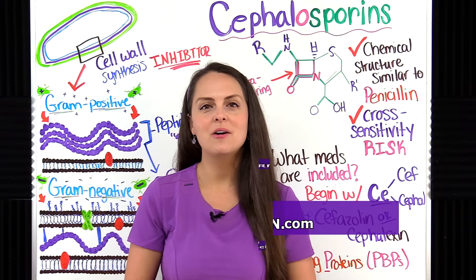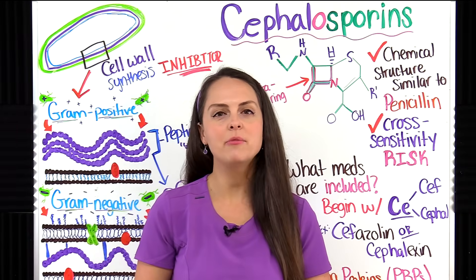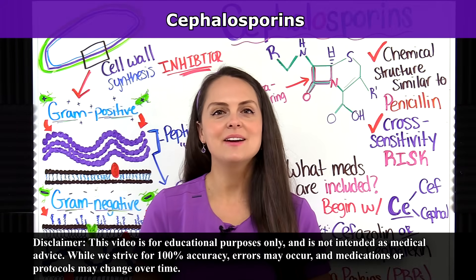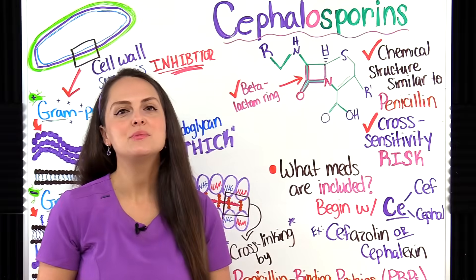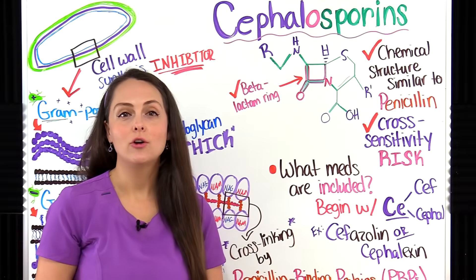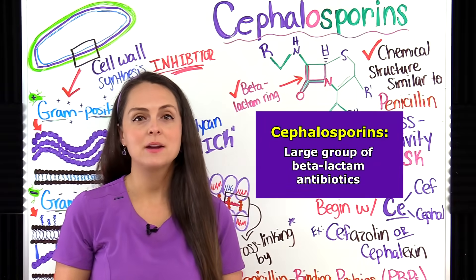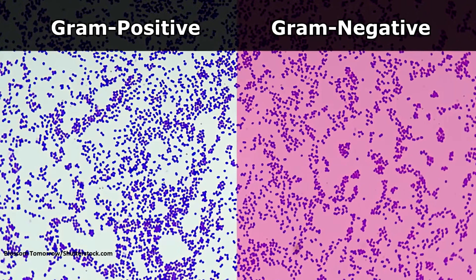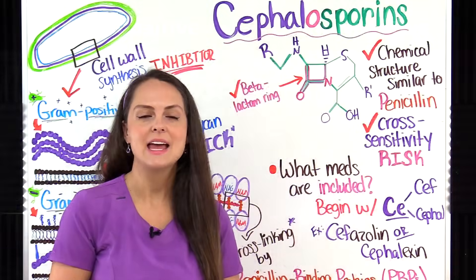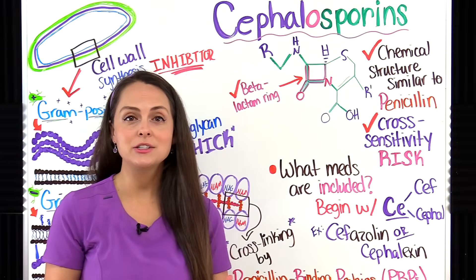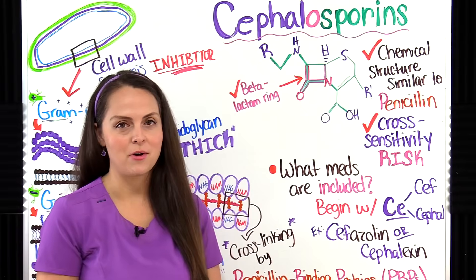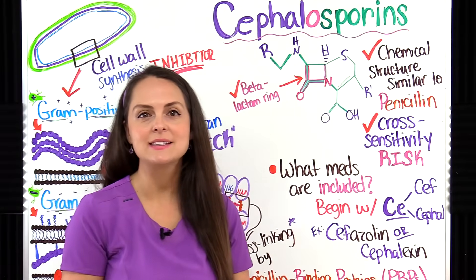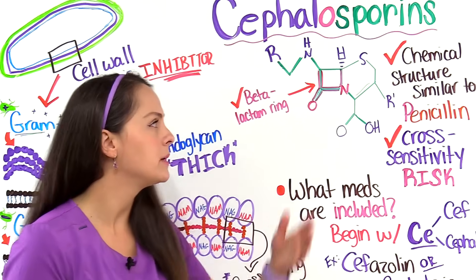It's Sarah, registered nurse at RN.com, and in this video I'm going to be covering the antibiotic group known as cephalosporins. Cephalosporins are a large group of beta-lactam antibiotics that can be used to treat gram-positive and gram-negative bacterial infections. Cephalosporins are related to another group of beta-lactam antibiotics known as the penicillins, and the reason they're related is because they have a similar chemical structure.